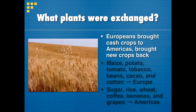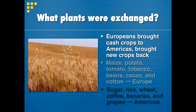Now we're going to focus on plants that were exchanged. Europeans brought what we call cash crops to the Americas, and they brought new crops back from the Americas. Cash crops are things that can be grown on large plots of land and sold for a lot of money — things that were very much needed in Europe, which did not have nearly as much good farmland as the Americas. Maize (also known as corn), potatoes, tomatoes, tobacco, beans, chocolate, and cotton all went to Europe from North and South America and revolutionized the European diet.